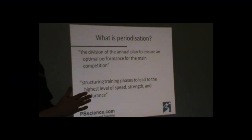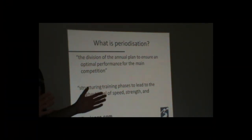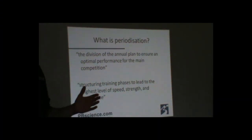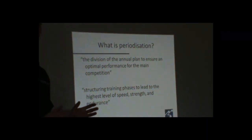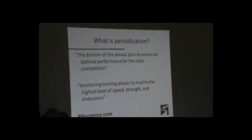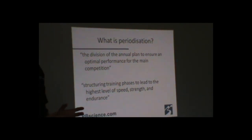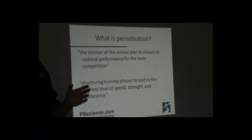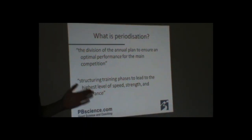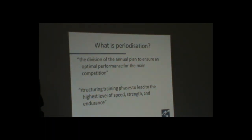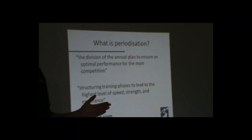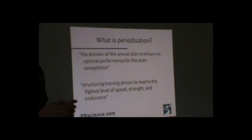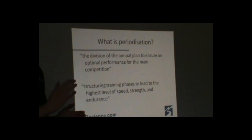The first quote: the division of the annual plan to ensure an optimal performance for the main competition. It's about having a plan — at the start of the season, you look at the next season and the future, and you build a plan of what you're going to do at each stage. It's not leaving it to chance. You've got your big target in mind — it might be a road race, a time trial, or a sportive — and you want to be at your best for that event.